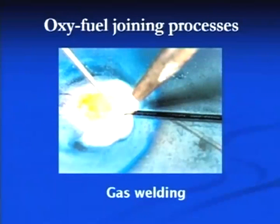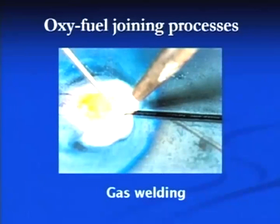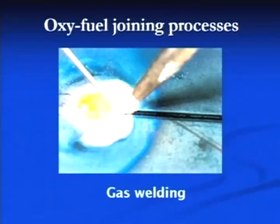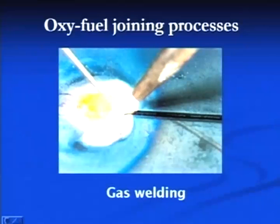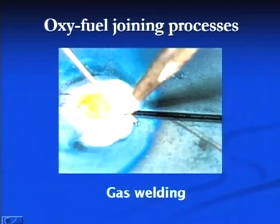The oxy-fuel joining process is largely known as the oxy-acetylene welding process, in which a mixture of oxygen and acetylene is used to produce a mixture which is ignited, and the combustion of the gaseous mixture produces heat. This heat is applied to melt the faying surfaces. The filler metal in this process may or may not be used.